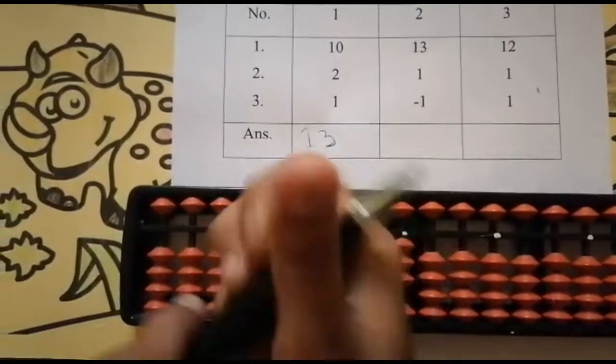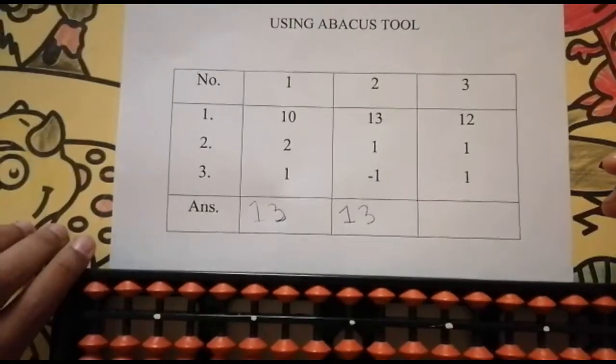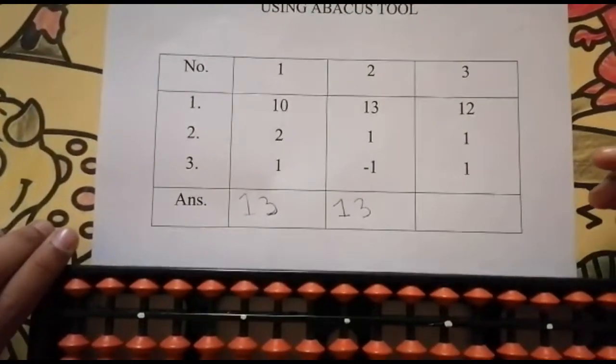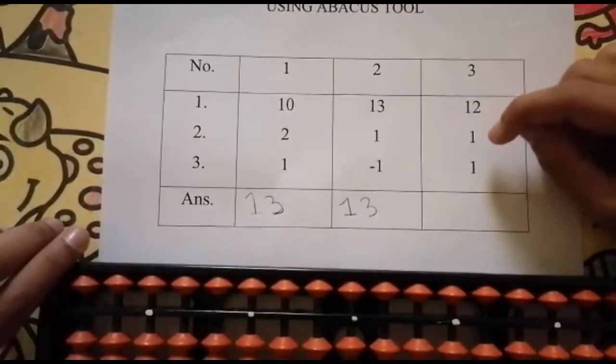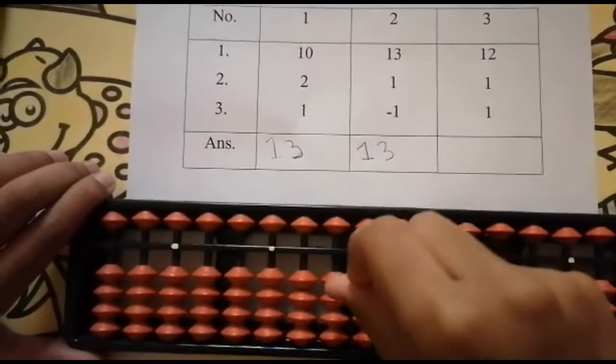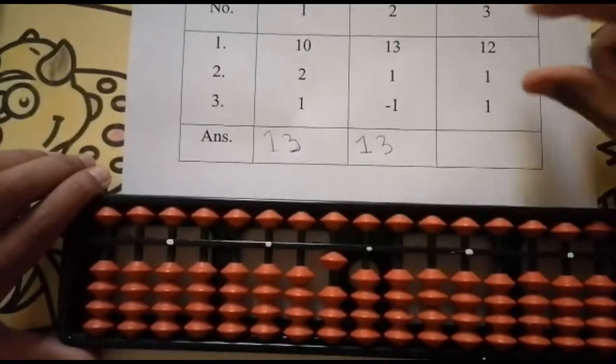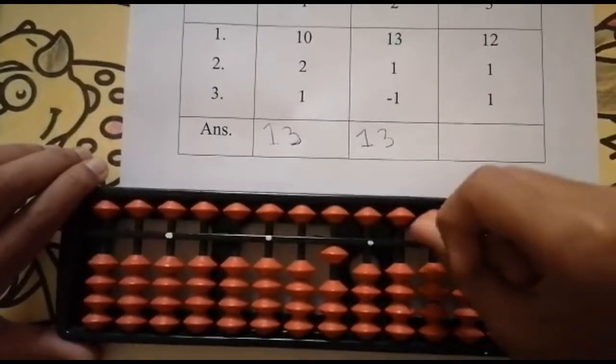Then the next sum. We have to add 10 in the tens place and add 2 in the ones place.